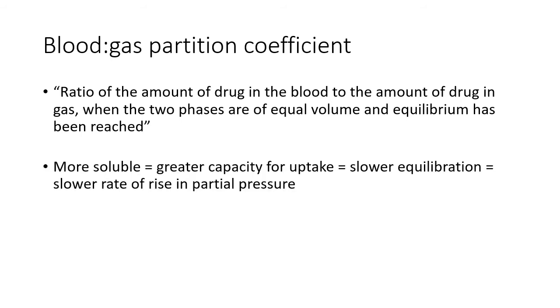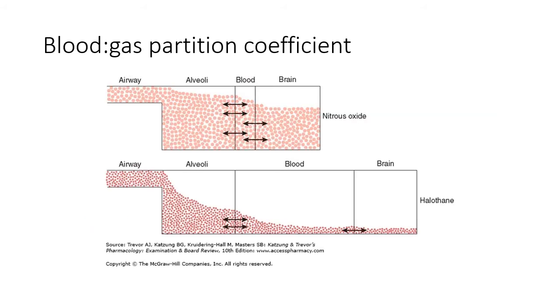In short, if a drug is highly soluble in blood, then more of it needs to be transported into blood for the partial pressure to rise. It is not the amount of drug in the effect site that matters, it is instead the partial pressure that is exerted. It is not the same as the amount of drug in the blood. Here is a diagram which very neatly explains why that relationship is the way it is. One way of thinking about it is that the blood is a much better sponge for halothane than it is for nitrous oxide.